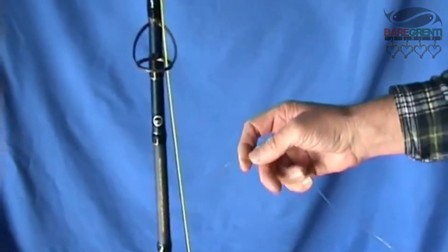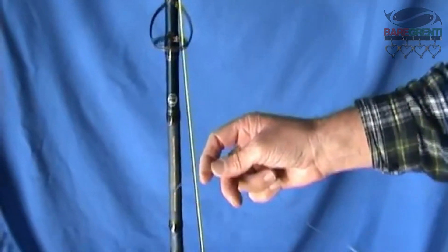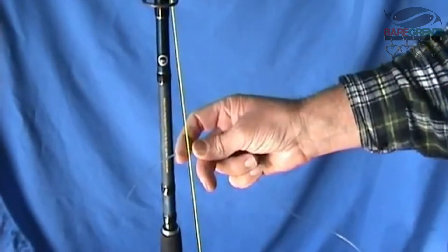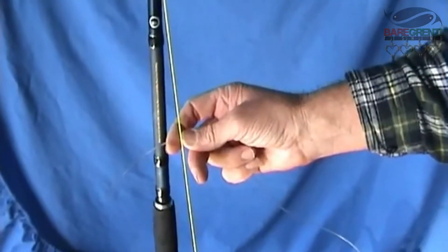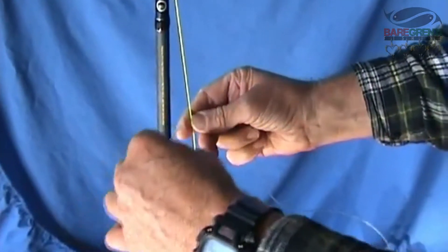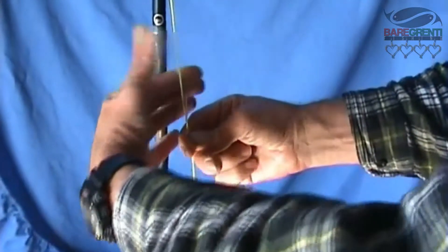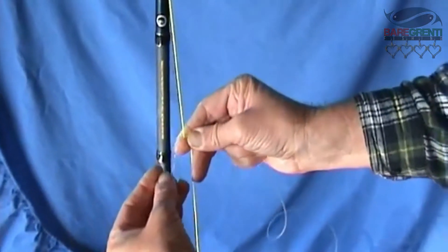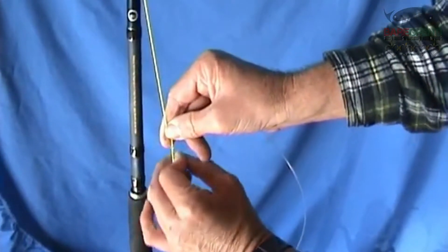I'm hoping it's going to make it a bit easier for you to see. The FG knot is just a series of twists. You come through behind with your braid and you just bring it around the top.